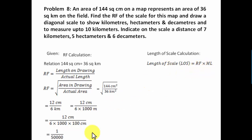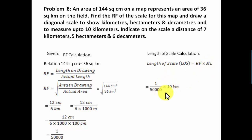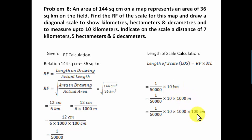The formula for length of scale is RF multiplied by the maximum length (ML). The RF is 1/50,000, and the scale should be long enough to measure up to 10 kilometers, so ML is 10 kilometers. Converting: 10 km = 10,000 meters = 1,000,000 centimeters. Dividing by 50,000 gives us a length of scale of 20 centimeters.